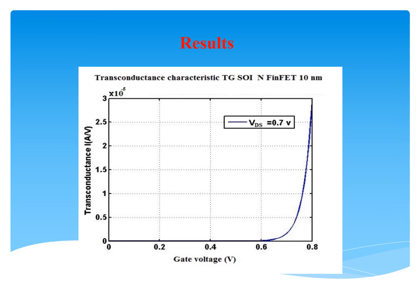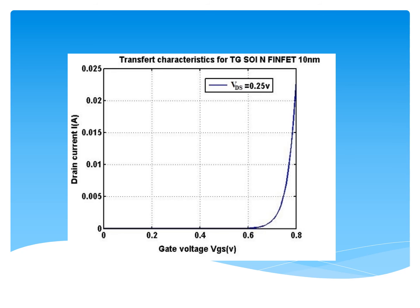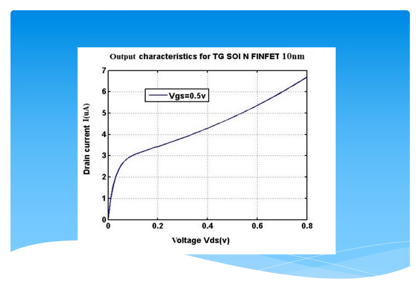Results. The first graph represents the transconductance characteristic of the Trigate SOI FinFET 10 nm, showing transconductance versus gate voltage. We notice that the transconductance starts to increase when the gate voltage equals the threshold voltage for a drain-source voltage of 0.7 V. The transfer characteristic shows the drain current versus gate voltage with VDS equal to 0.25 V; the drain current starts to increase at the threshold voltage. The output characteristic shows the drain current versus drain-source voltage for gate-source equal to 0.5 V; the drain current starts to increase at a drain-source voltage of 0.1 V.